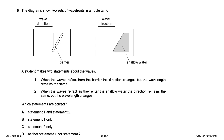The diagram shows two sets of wavefronts in a ripple tank. Statement 1: when the wave reflects from the barrier, the direction changes but the wavelength remains the same — correct. Statement 2: when the wave refracts into shallow water, the direction remains the same but the wavelength changes — incorrect, because the direction also changes. So statement 1 only is right, option B.